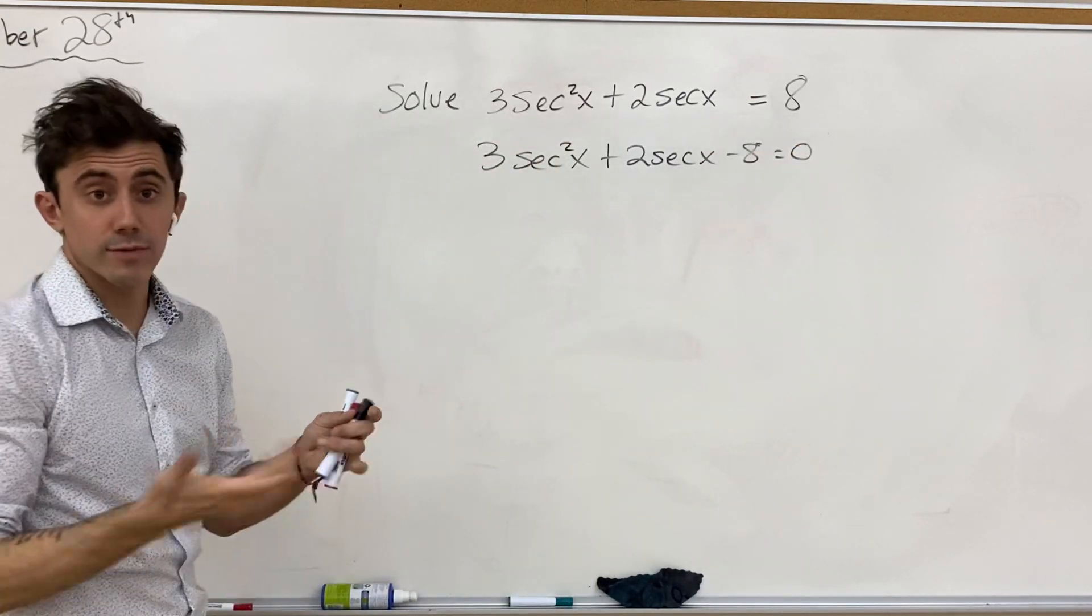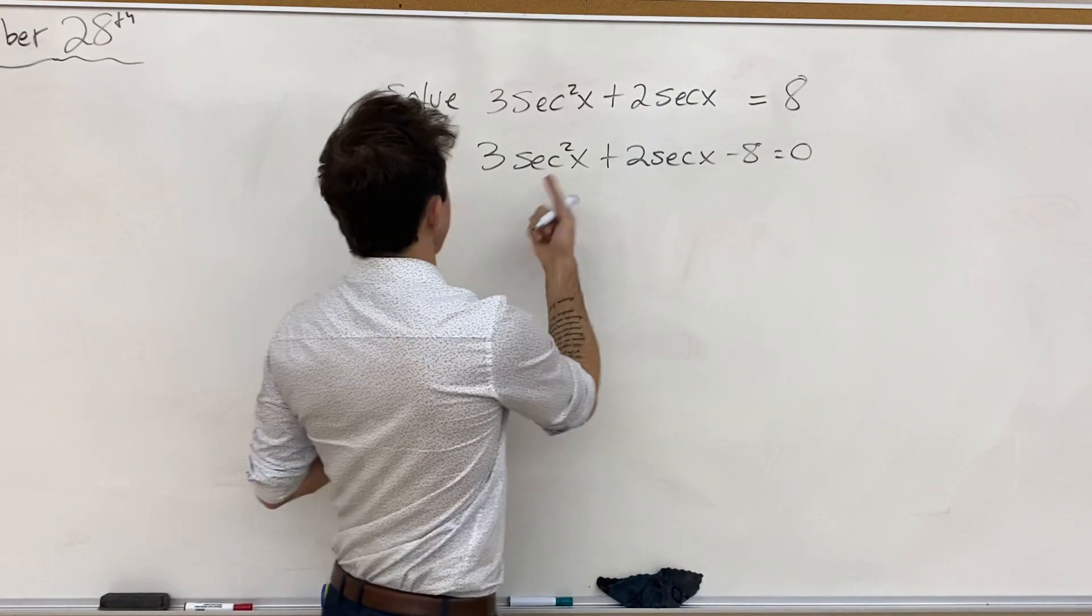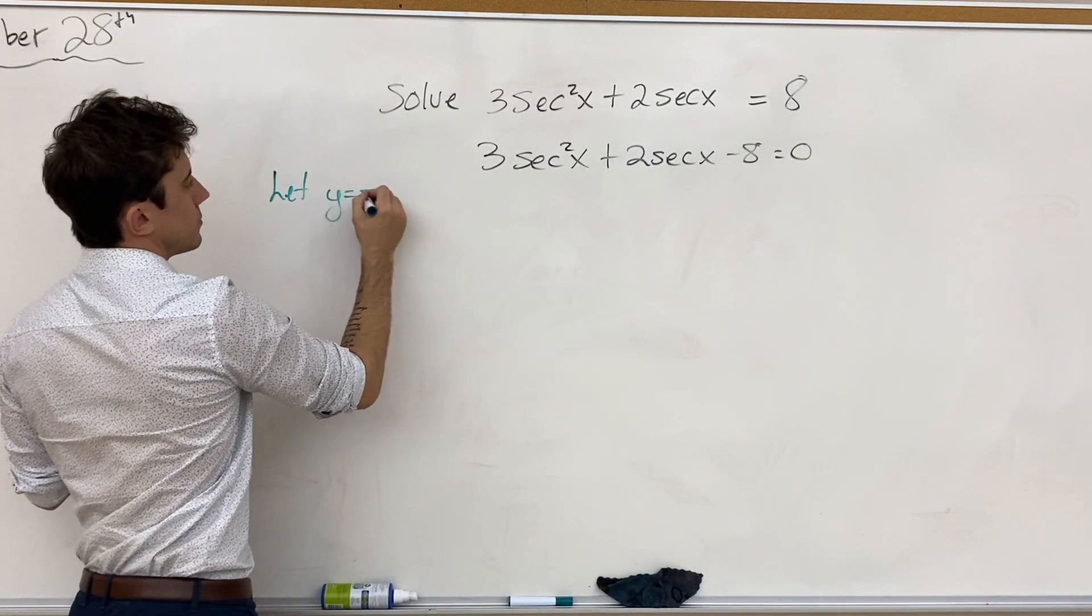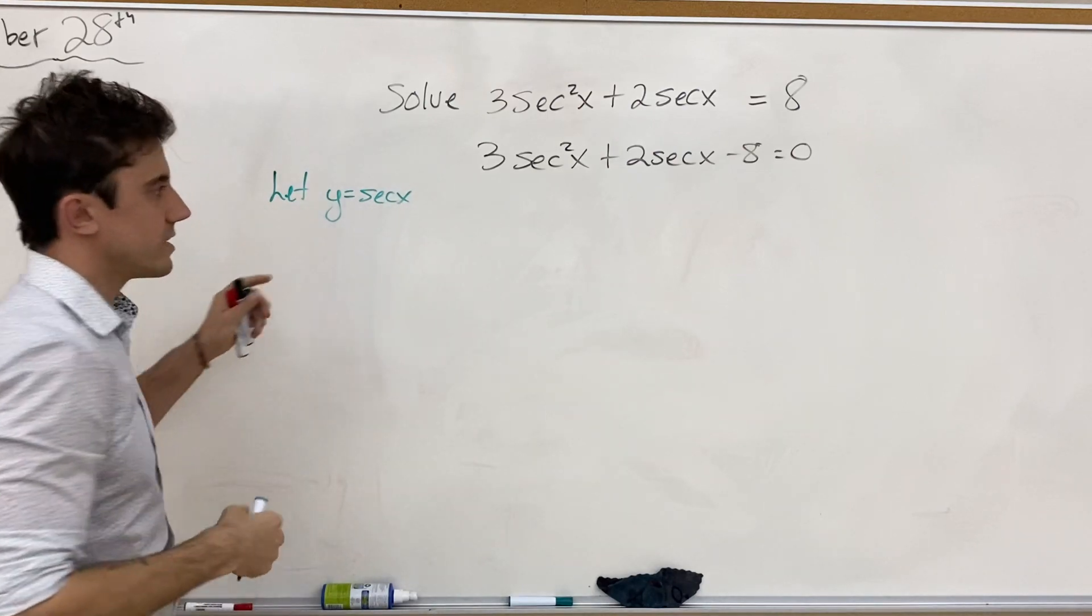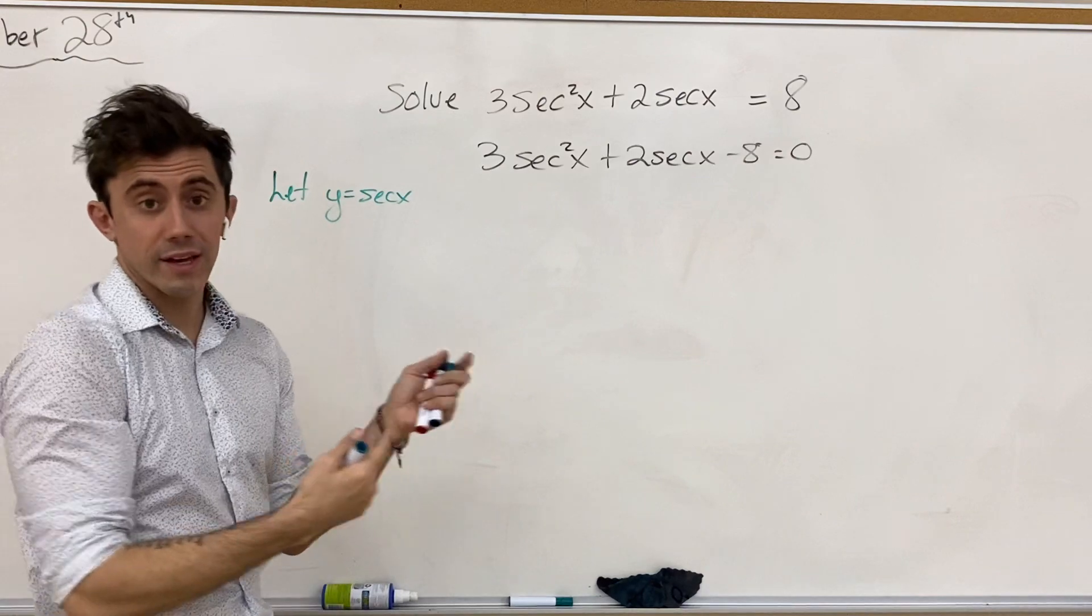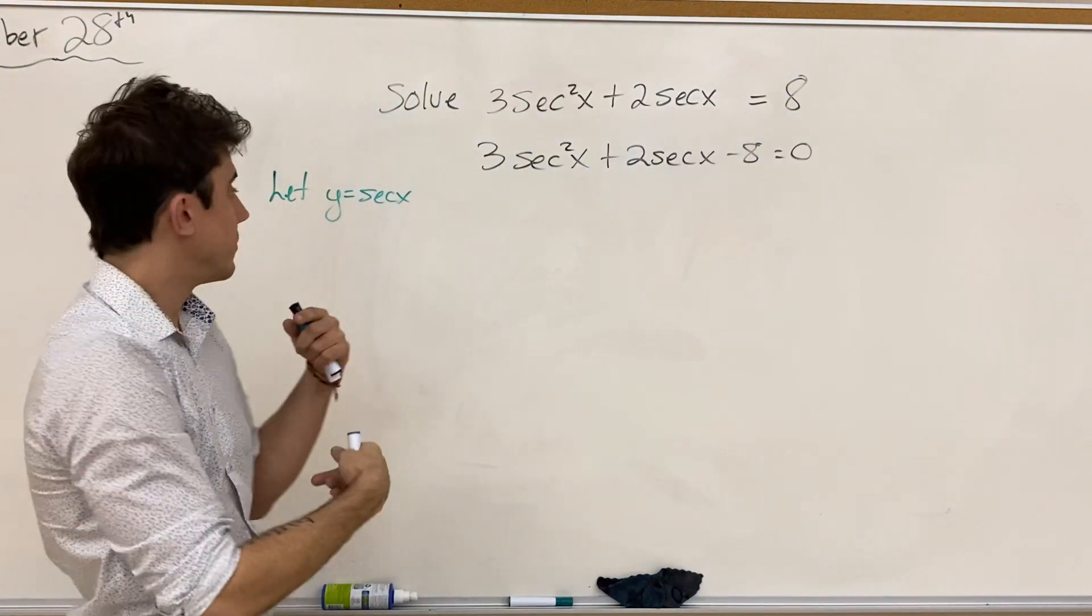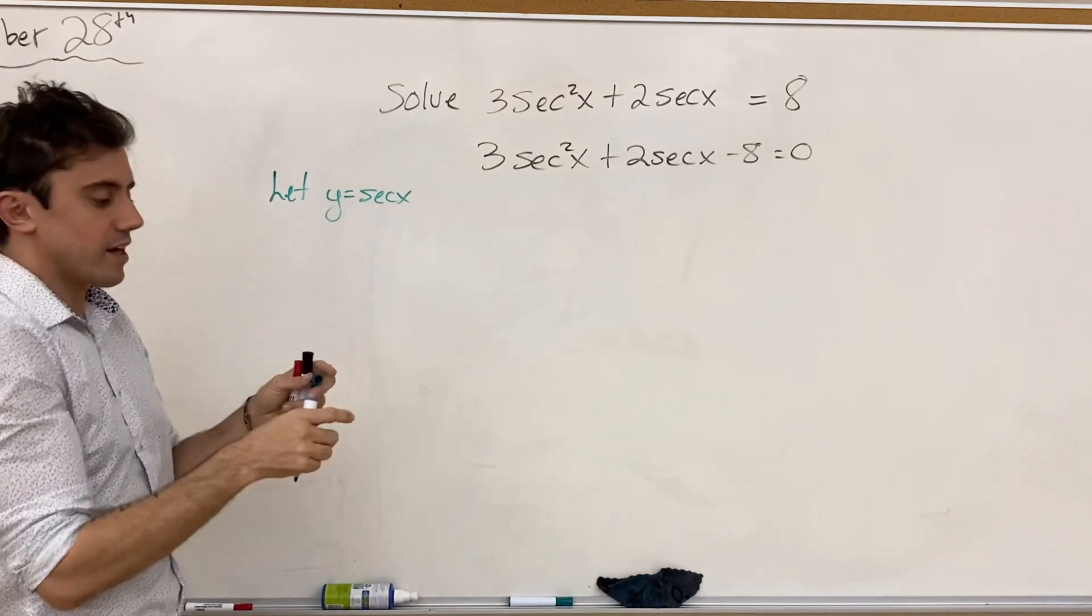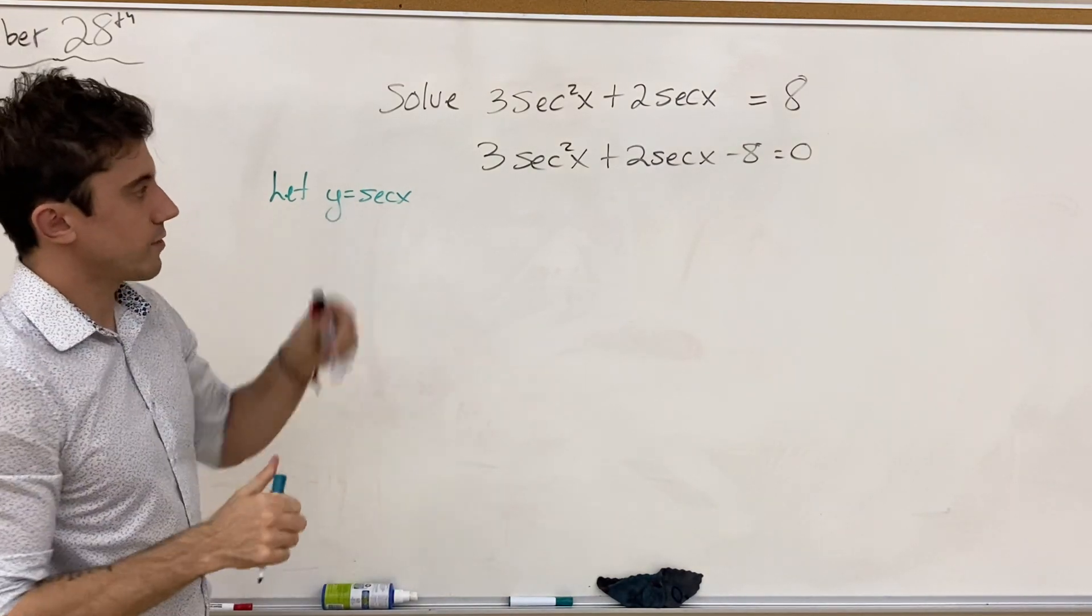And now you can make a substitution of, let's say, let y be equal to secant x, in which case you would now have something like 3y squared plus 2y minus 8, and you can solve that way and then re-substitute out at the end. I'm not going to bother, but you do have the option of doing that if that helps. Let's just go through and try to solve it normally.